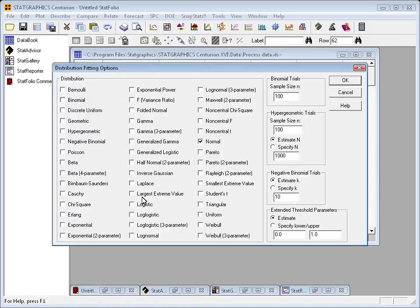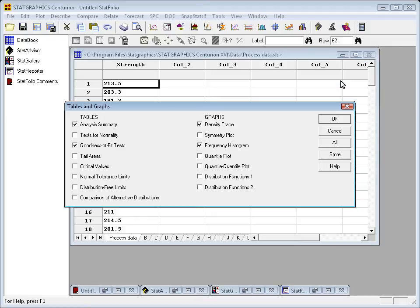Now, this distribution fitting procedure does a lot more than just test for normality. In fact, we can fit any of 45 different probability distributions. In this case, I'm just interested in the normal, however, so I'll keep it at its default.